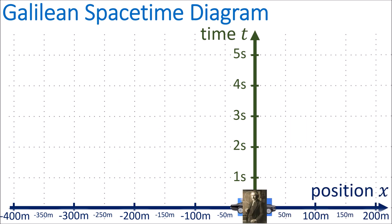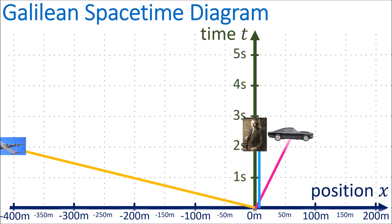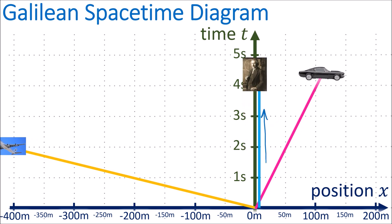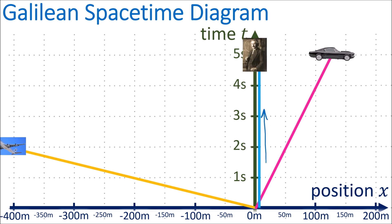To summarize spacetime diagrams: objects that are not moving will have a completely vertical world line, and objects that are moving at a constant speed will have a diagonal world line. Objects that are moving more slowly will have a world line closer to the vertical, and objects that are moving more quickly will have a world line closer to the horizontal. So spacetime diagrams and world lines help visualize the motions of objects through space and time.